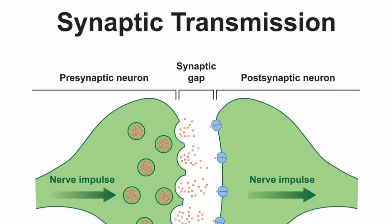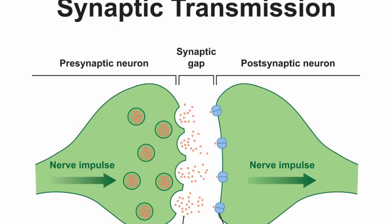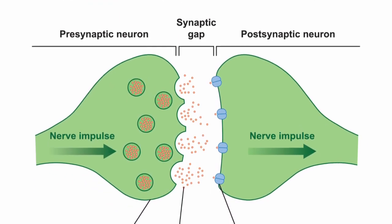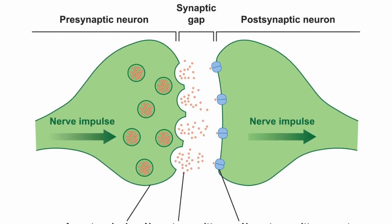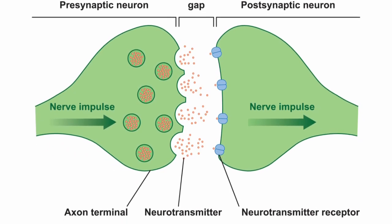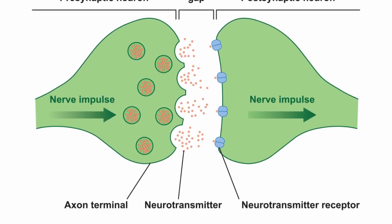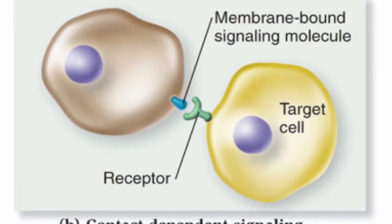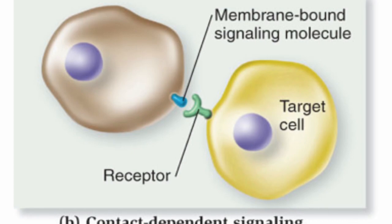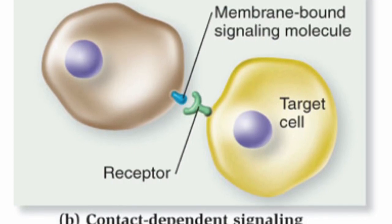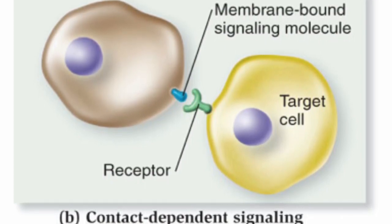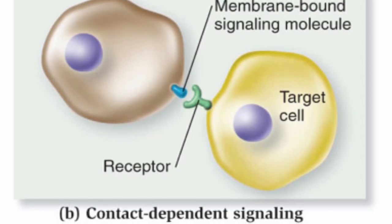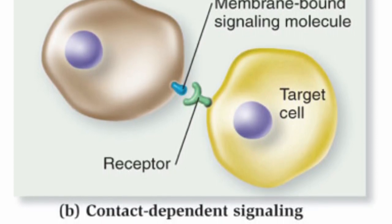There is also synaptic signaling. In the nervous system, neurons release neurotransmitters at synapses to communicate with adjacent neurons, muscle cells, or gland cells. Contact-dependent signaling involves physical contact between the signaling cell and the target cell. Notch signaling is an example of contact-dependent signaling, which plays a role in cell fate determination and differentiation.